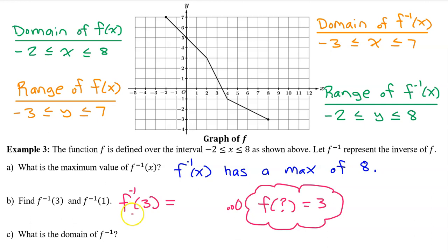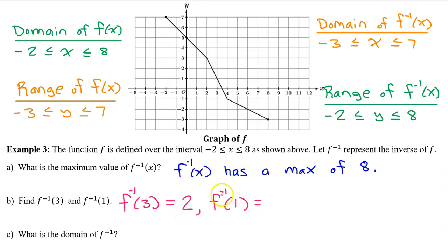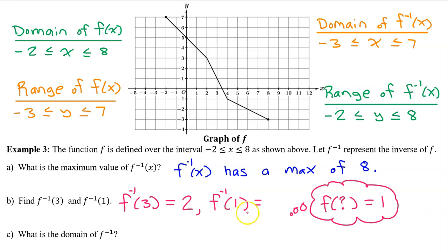To evaluate f inverse at 3, ask yourself: f at what is equal to 3? The output value of 3 is right here, so we can see that f at 2 is equal to 3. So that's the answer. Next, we need to evaluate f inverse at 1. To do this, we ask ourselves: f at what is equal to 1? Here's the output value of 1, and we see that f at 3 is equal to 1. So that's the answer.